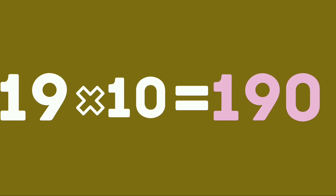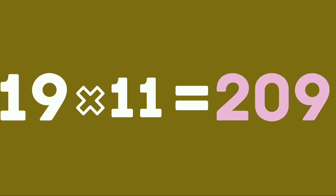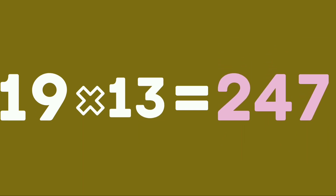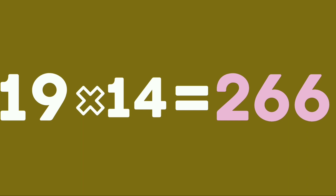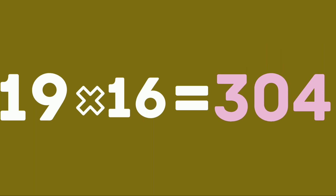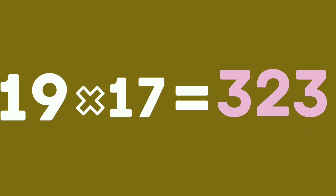Nineteen tens are one hundred ninety. Nineteen tens are one hundred ninety. Nineteen elevens are two hundred nine. 19×12 are 228. 19×12 are 228. 19×13 are 247. 19×13 are 247. 19×14 are 266. 19×14 are 266.